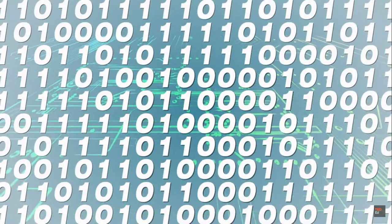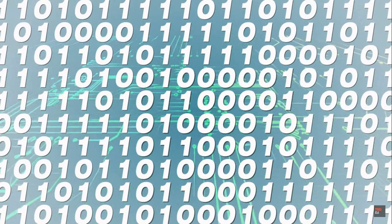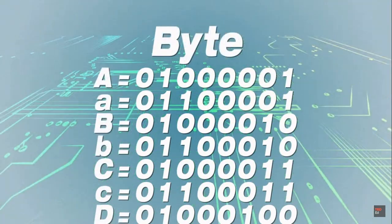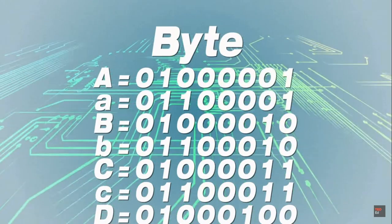But how can you get so much information out of just zeros and ones? Well, by putting lots of them together. For example, a letter is represented in one byte, or eight bits.